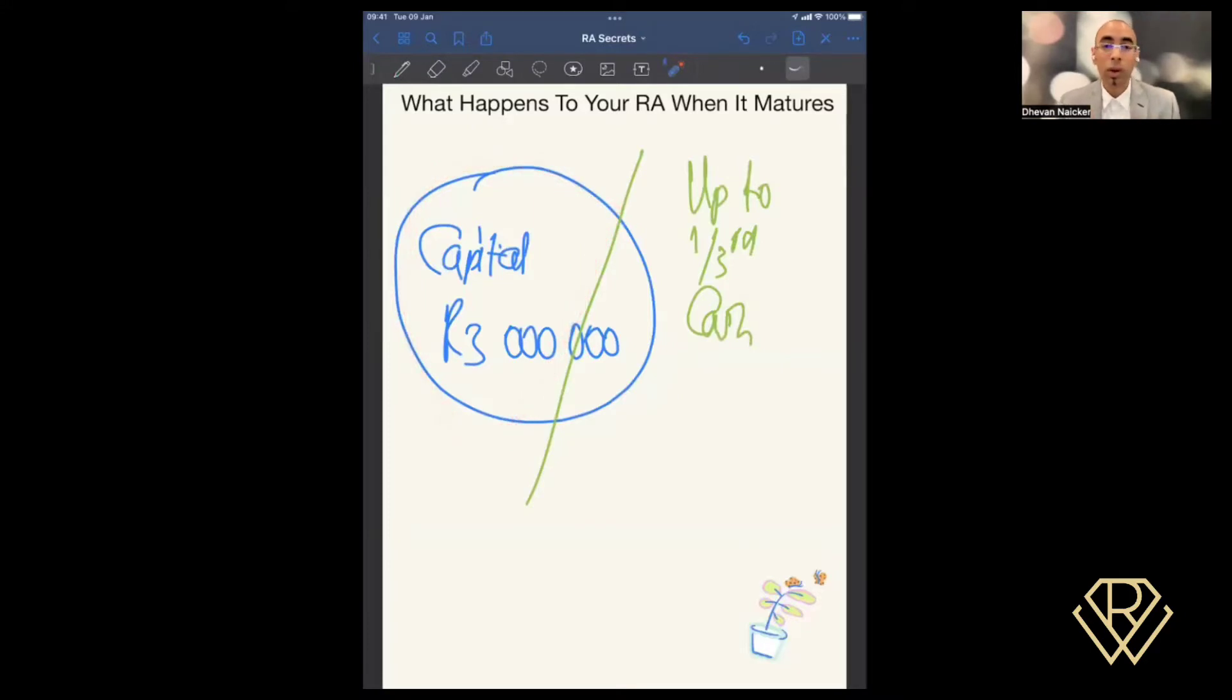I'll talk you through that first, and then I'll go through the balance here, which is the two third component. Now, the one third component, what I want you to be very mindful of is SARS taxes you on any money that comes into your bank account. So because the one third capital is going to get paid to your bank account, it naturally means one of the elements that you want to pay very careful attention to is tax.